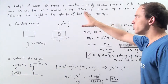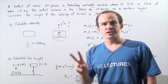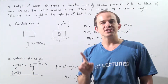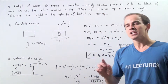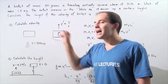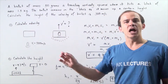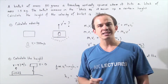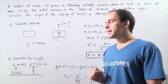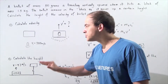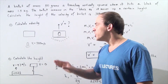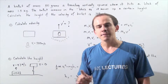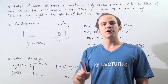We break this problem down into two steps. In step one, we use the conservation of momentum to calculate the velocity of the block-bullet system right after our completely inelastic collision takes place. And then in step two, we use that velocity and the conservation of energy to solve for the height.